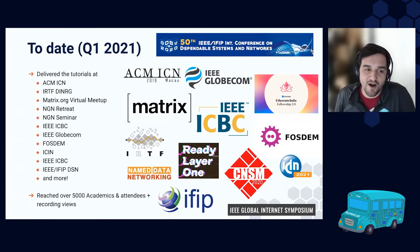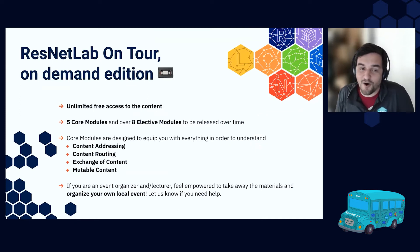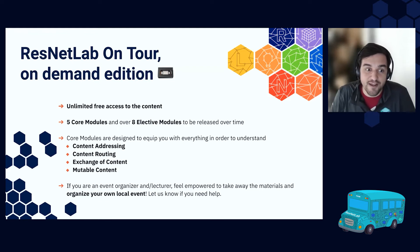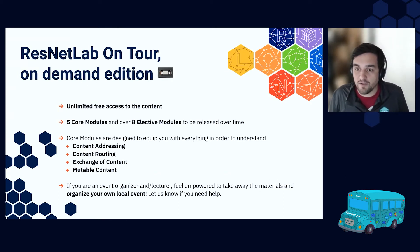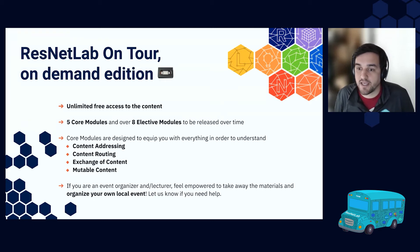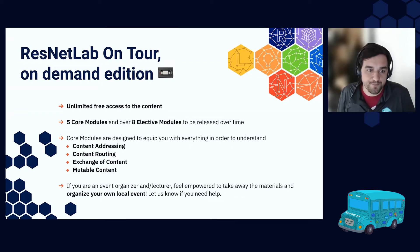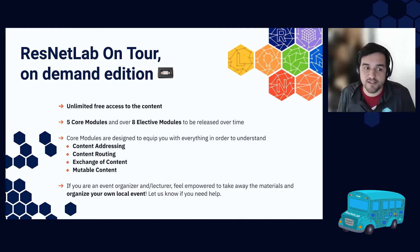This is the ResNetLab OnTour on-demand edition, and we are giving everyone in the world unlimited free access to all the content. It starts with what we call the five core modules that welcome everyone into what the Web3 is, how IPFS and libp2p work, and how content addressing works. Then we'll have over eight elective modules — specialization modules — that people can choose to watch if interested, and we'll be releasing these over time. The core modules are really designed to equip you with everything you need to understand content addressing, content routing, exchange of content, and mutable content.